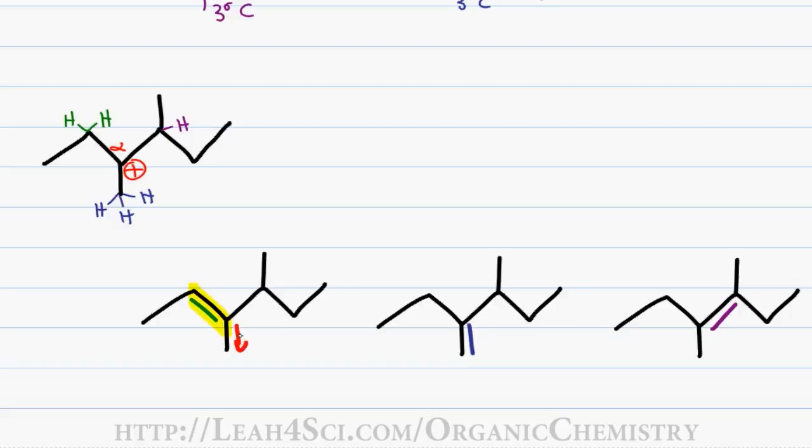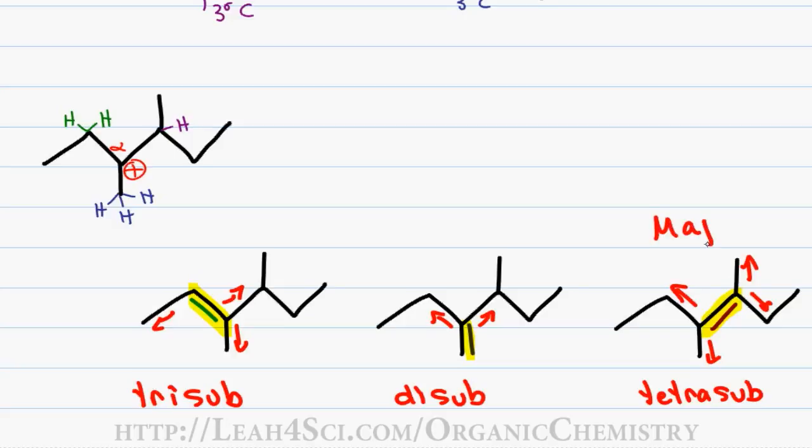The green pi bond has one, two, three substituents making it trisubstituted. The blue pi bond has two substituents making it disubstituted. And finally, the purple pi bond has one, two, three and four substituents making it tetrasubstituted. The final product has the most substituents making it the most stable pi bond and therefore the major product in this reaction. The trisubstituted is a little less stable making it the middle product and the disubstituted is the least stable making it the minor product in this reaction.